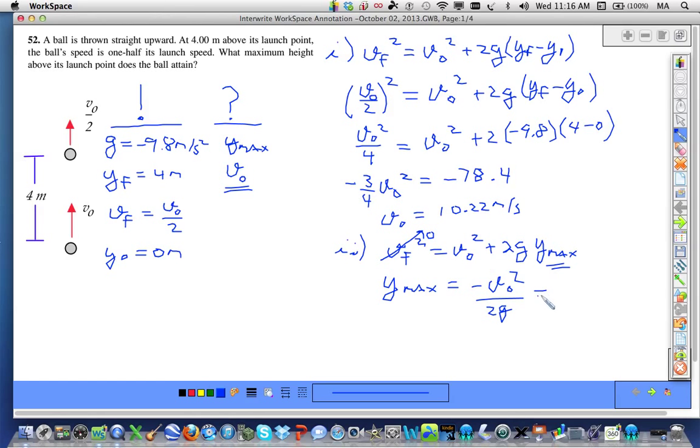So, substituting our value of 10.22 for v-naught, divide that by twice negative 9.8, we get a y-max of 5.33 meters.